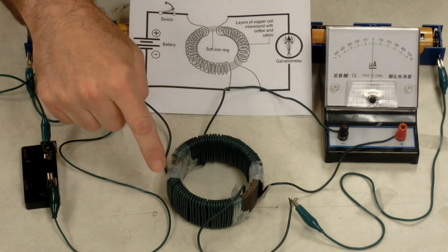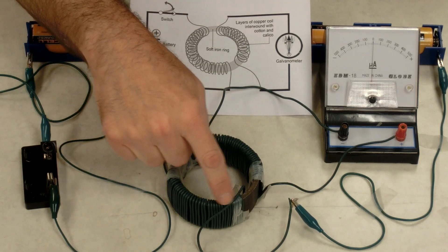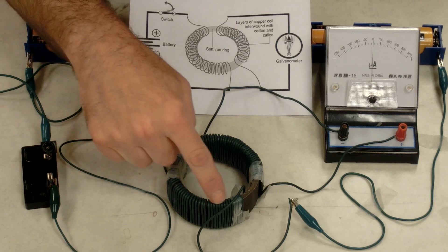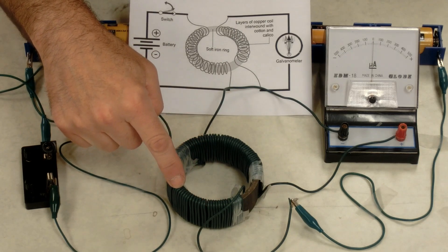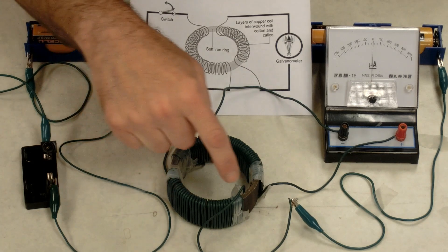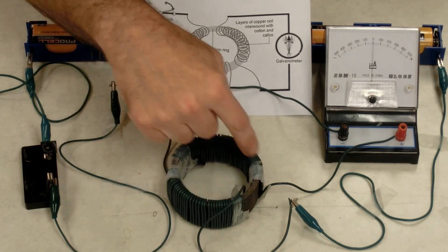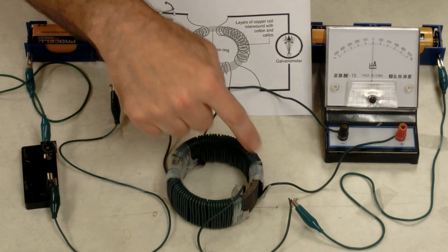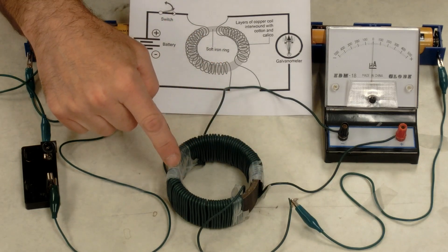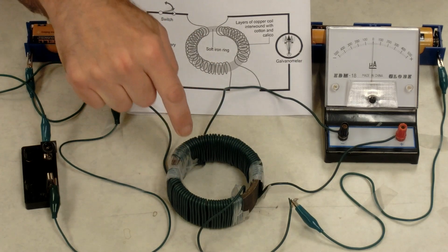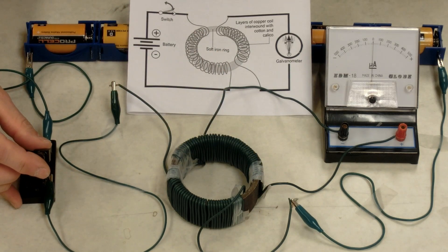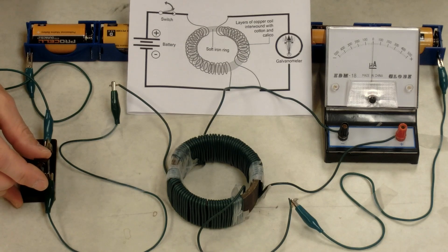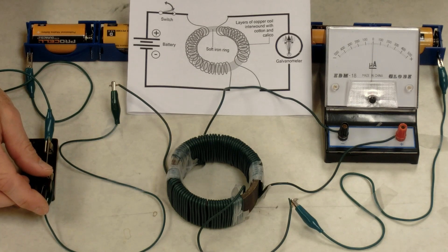there's a magnetic field that builds up around this wire. Current-bearing wire creates a magnetic field. That magnetic field will temporarily magnetize this iron ring. As that iron ring becomes magnetized, it will induce current in this other wire. So when I close the switch, watch the needle. I close it, it deflected to the right, and then it went back to nothing.